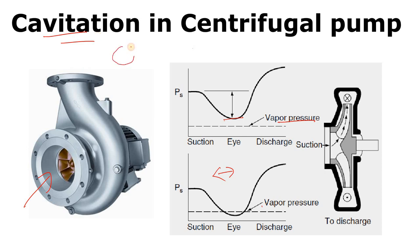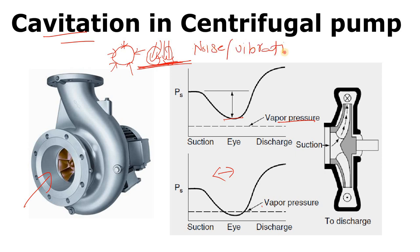As the vapor bubbles form and then collapse, liquid fills or replaces that space. The velocity of the liquid replacing that space is very high, so it strikes at the surface of the pump. As this happens frequently, there is noise and vibration at that time. If there is noise coming from the centrifugal pump, you can say that cavitation is at its peak — meaning there is extreme cavitation occurring.